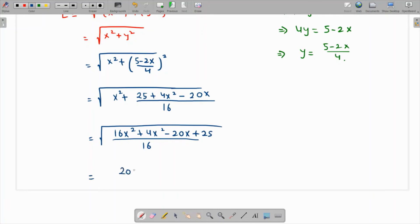Taking the square root, the square root of 16 is 4, so this is sqrt(20x² - 20x + 25)/4. This is the required value of the distance. Thank you.